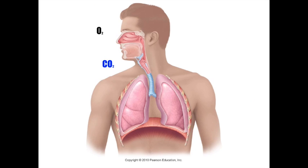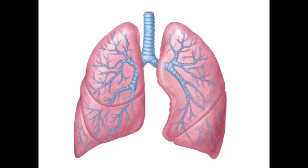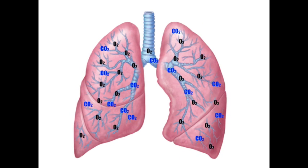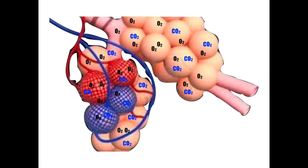When we inhale air, both oxygen and some carbon dioxide enter our respiratory systems. Both gases enter at the same time, although this animation shows each one going in separately for simplicity. The air, filled with oxygen and carbon dioxide, and other gases, travels down the trachea and into both the bronchi and the bronchioles.